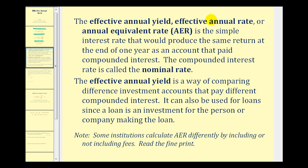The effective annual yield — sometimes called effective annual rate or annual equivalent rate — is the simple interest rate that would produce the same return at the end of one year as an account that paid compounded interest. The compounded interest rate is called the nominal rate. So the effective annual yield is the simple interest rate that produces the same return as the nominal rate.